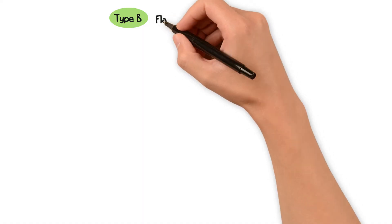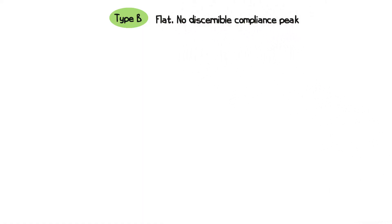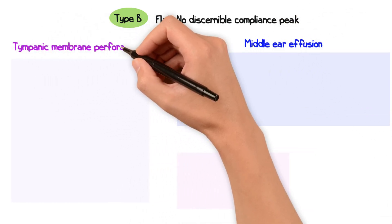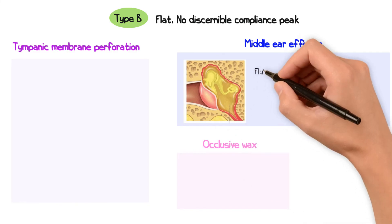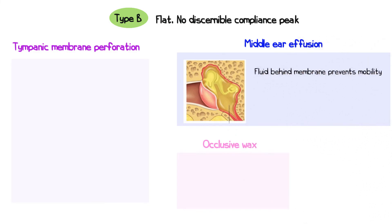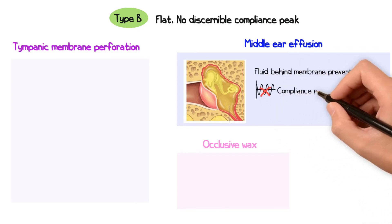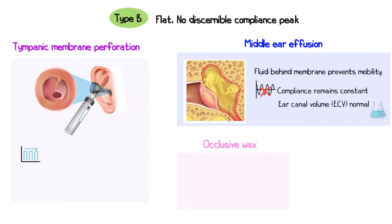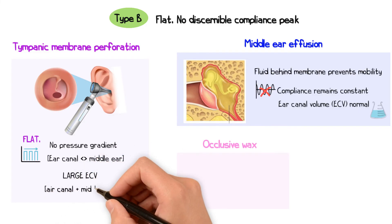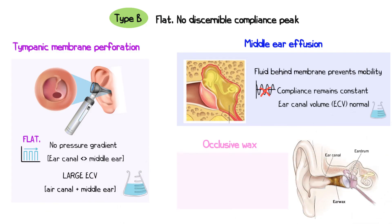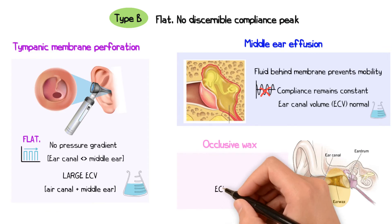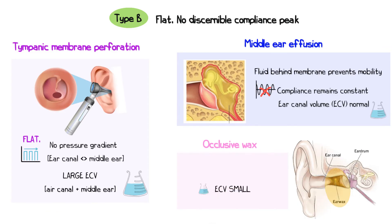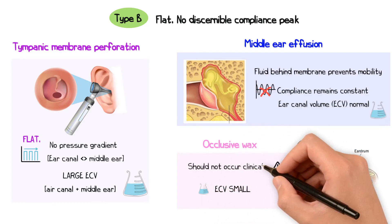A type B trace is a flat tympanogram indicating no discernible peak in compliance. This could be due to middle ear effusion, tympanic membrane perforation, or potentially occlusive wax. If fluid is present behind the tympanic membrane, its movement is restricted, resulting in no variation in compliance with pressure changes, and the ear canal volume in these cases is usually normal. When the tympanic membrane is perforated, the air pump is unable to create a pressure gradient, resulting in a flat trace, and the ear canal volume will be larger than normal. If a plug of wax is occluding the external auditory canal, a flat trace will also occur but the ECV will be abnormally small. Typically, wax is removed prior to tympanometry, so this situation should not occur in clinical practice.